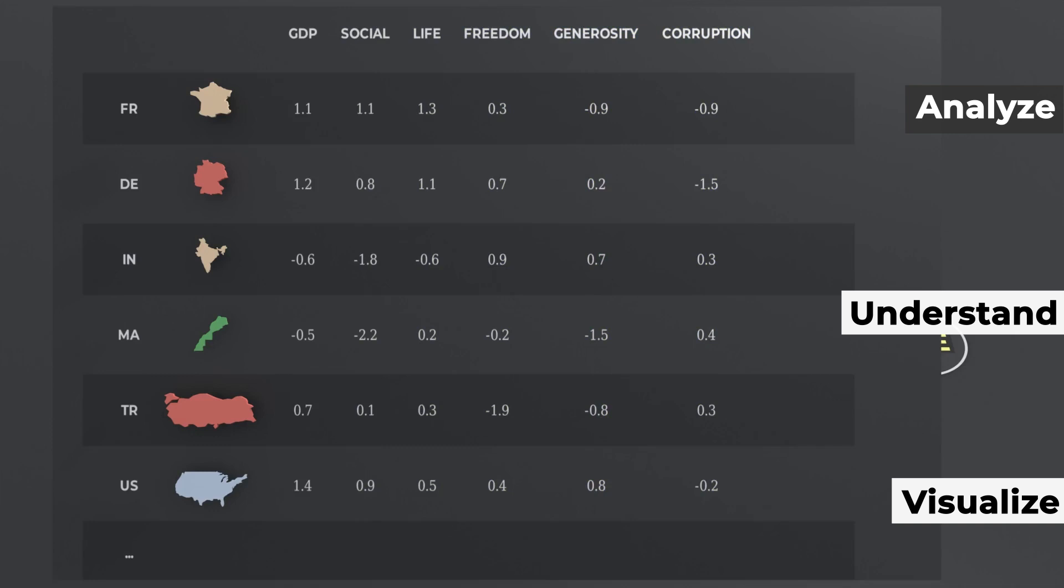Obviously, we cannot visualize six dimensions all at once, but we can pick two or three factors, for example GDP, social support, and life expectancy, and visualize that.